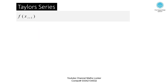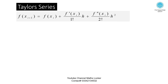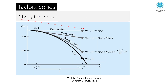Exercise: Taylor series. The formula is: f of x i plus 1 is equal to f of x i plus f dash of x i divided by 1 factorial times h, plus f double dash of x i divided by 2 factorial times h squared, plus dot dot dot, continuing to higher order terms.